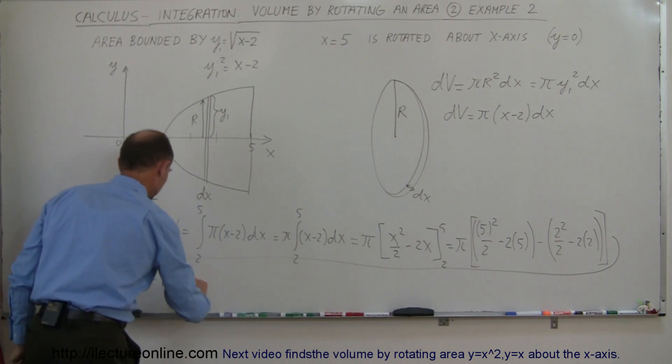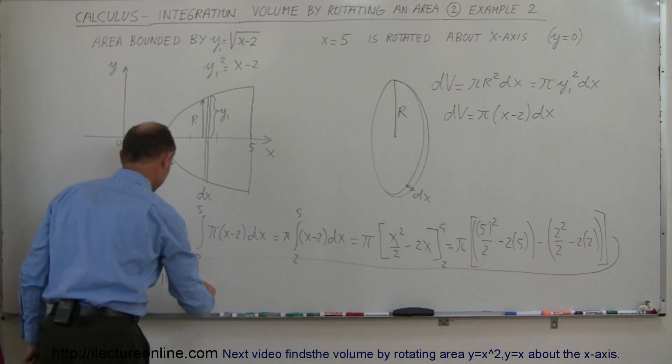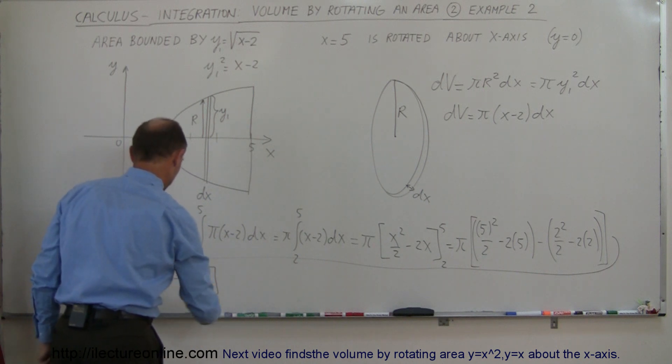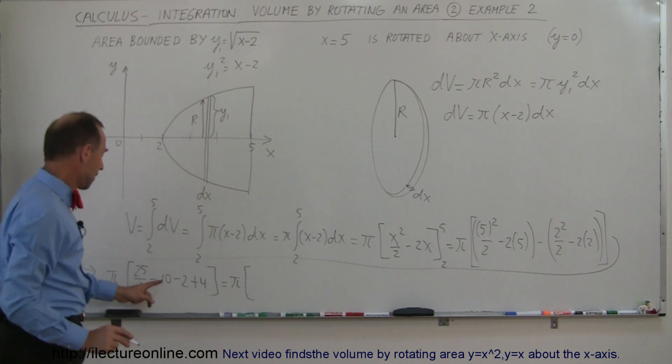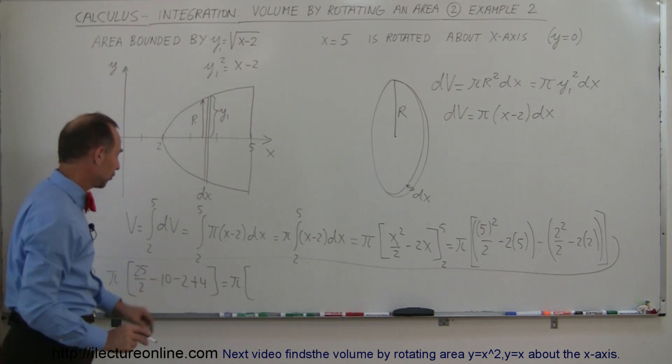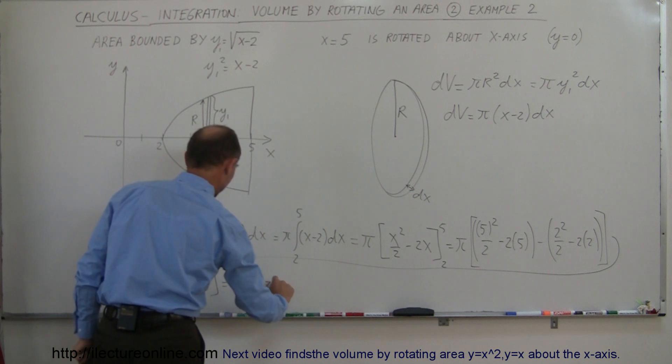A minus times a minus means a plus, plus 4. So this is equal to π times—I get minus 10 minus 2 is minus 12, plus 4 is minus 8—so I get 25 over 2 minus 8.